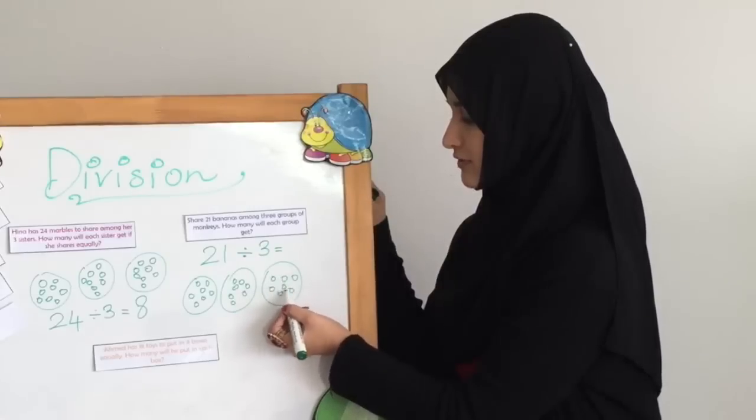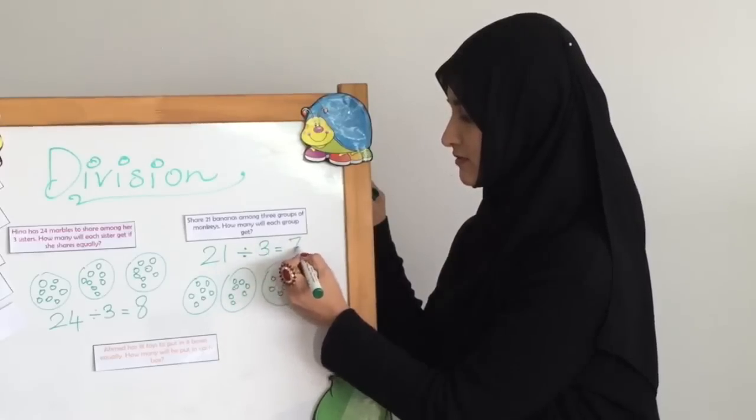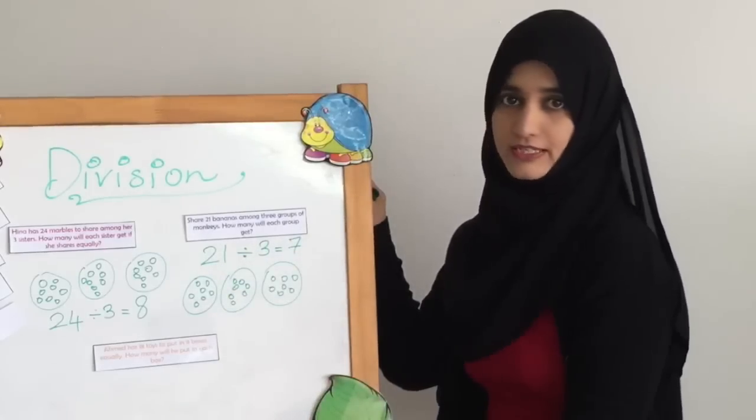One, two, three, four, five, six, seven. Each group is going to get 7 bananas.